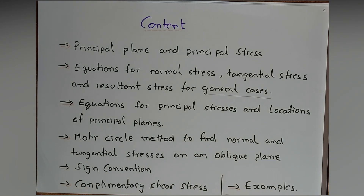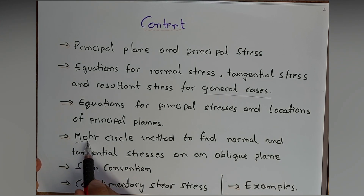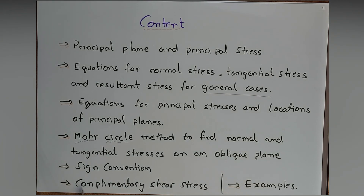Next is the Mohr circle method to find normal and tangential stresses on an oblique plane — Mohr circle is a key point. Then we have sign convention, which is similar to what we follow in shear force and bending moment diagrams. Finally, the last topic is complementary shear stresses, covering equations and theoretical parts, followed by examples based on all the above theory.